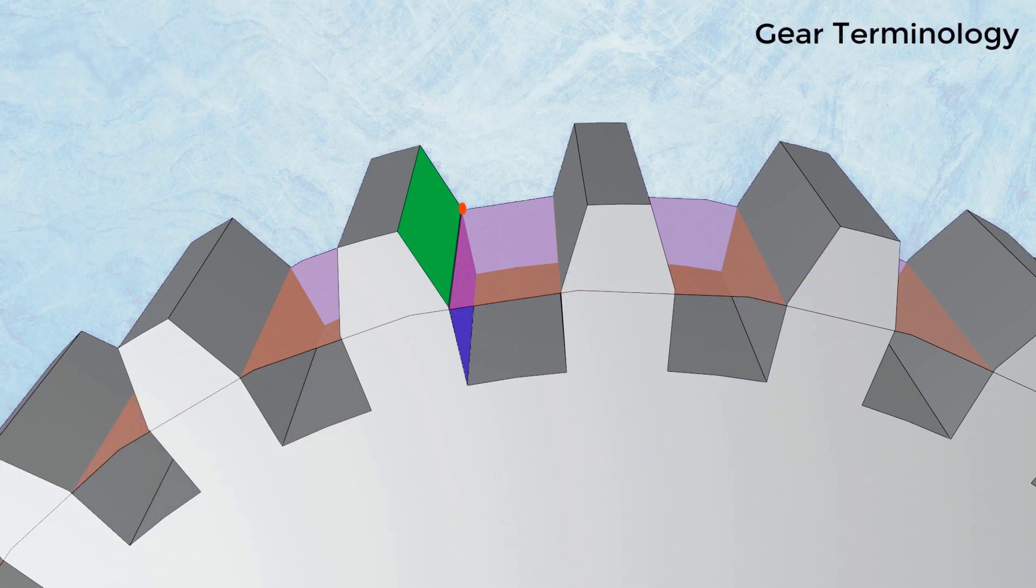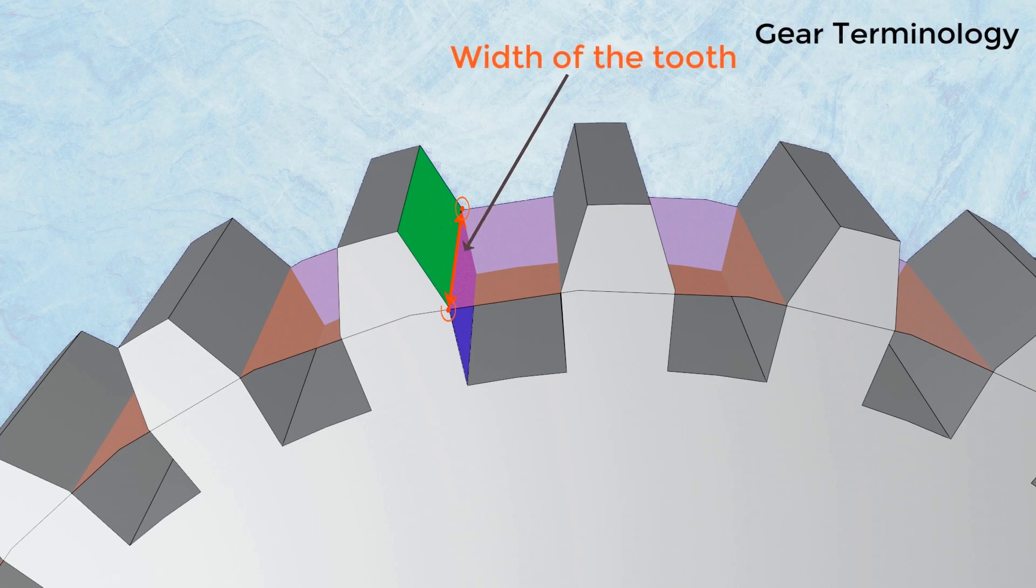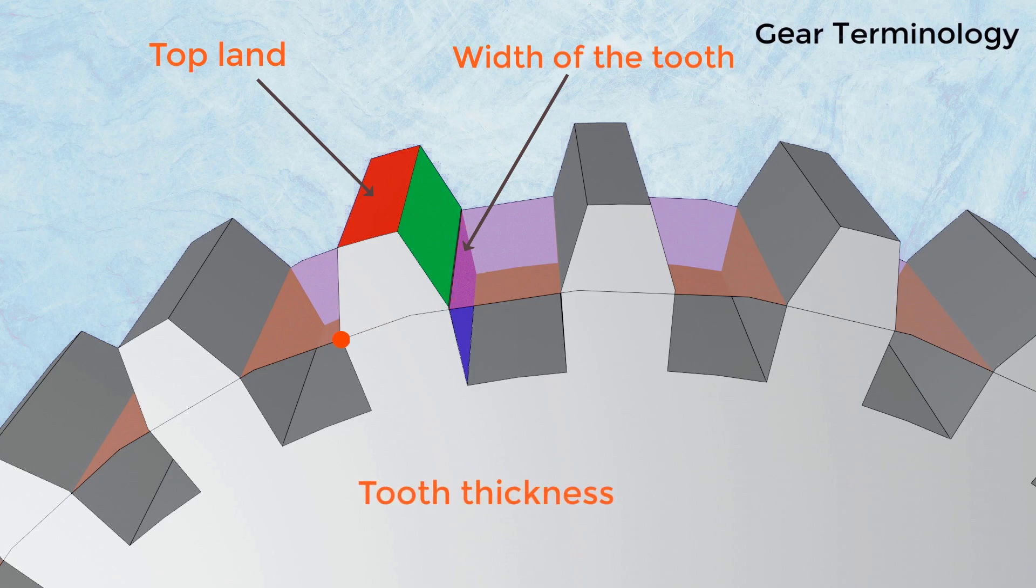Distance from one edge of the tooth to the other is called the width of the tooth. The topmost surface of the tooth is called the top land of the tooth. Tooth thickness is the width of the tooth measured along the pitch circle.